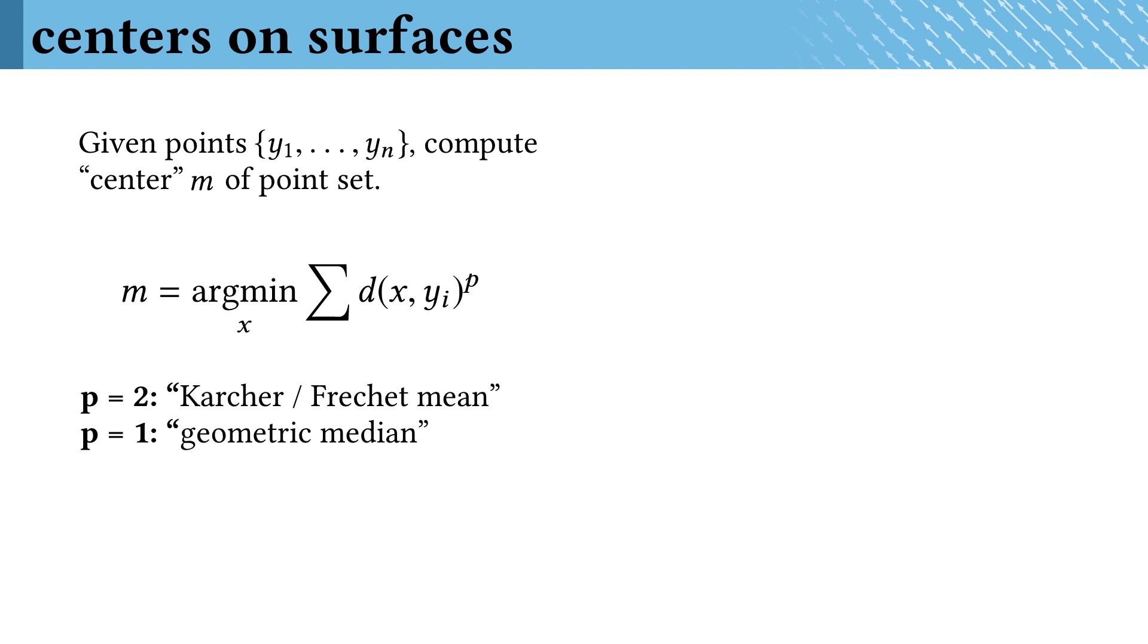For both, there's actually a very simple algorithm going back to the 1940s for computing centers called Weiszfeld iterations, which basically amounts to alternating evaluation of the logarithmic map and exponential map.